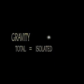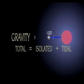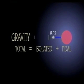Total gravitational force is the sum of effects from the isolated mass of Phobos and tidal gravitational forces of Mars. The distance 1.0 represents the current orbital radius. The simulation of combined effects covers the distance from 1.8 times the current radius, where tidal forces are negligible, to 0.75, where tidal forces are comparable to Phobos's own gravity.